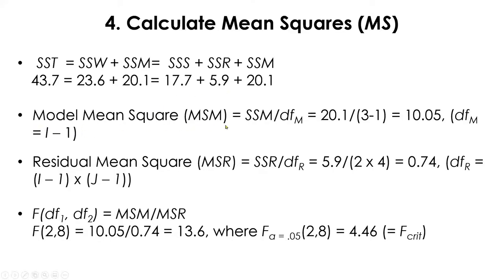The model mean square is SSM divided by the model degrees of freedom — same as between-subject ANOVA — giving 10.05. The residual mean square is SSR (5.9) divided by the residual degrees of freedom, which for within-subject design is (I − 1) × (J − 1), that is (number of groups − 1) × (number of subjects − 1) = 2 × 4 = 8, giving 0.74.